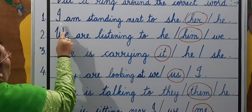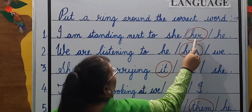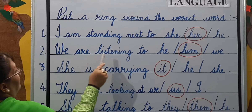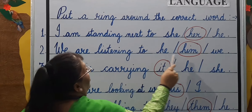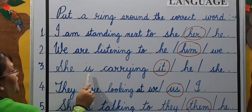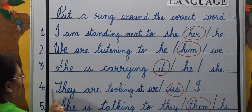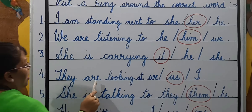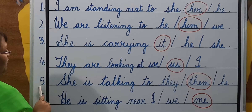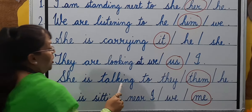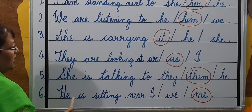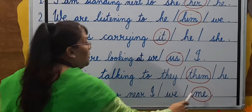Number one: I am standing next to her. Number two: We are listening to him. Number three: She is carrying it. Number four: They are looking at us. Number five: She is talking to them. Number six: He is sitting near me.